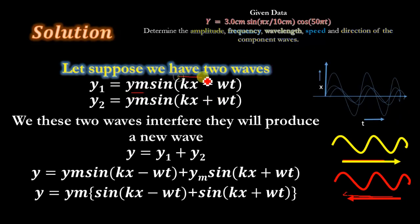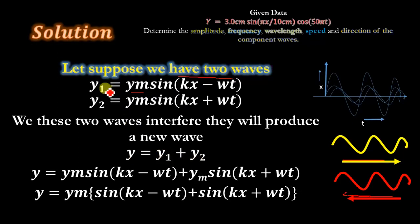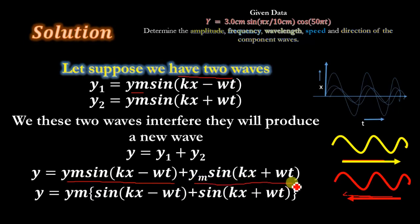Here ym is the amplitude, k is the wave vector, ω is the angular frequency, and t is the time. After the superposition of these two waves we get a new wave y = y1 + y2. Substituting the values, y = ym sin(kx − ωt) + ym sin(kx + ωt). Taking ym as common: y = ym [sin(kx − ωt) + sin(kx + ωt)].